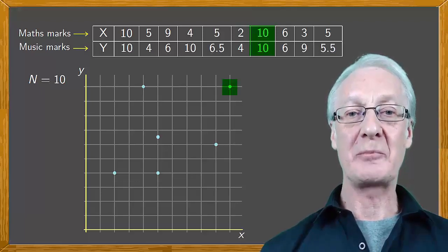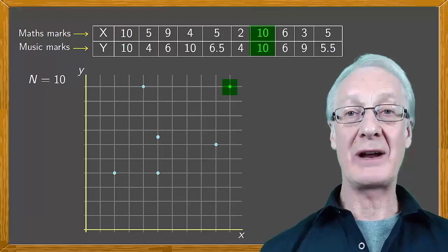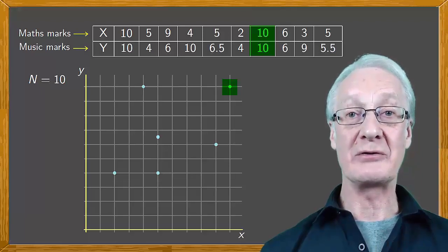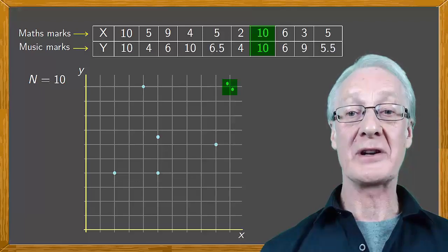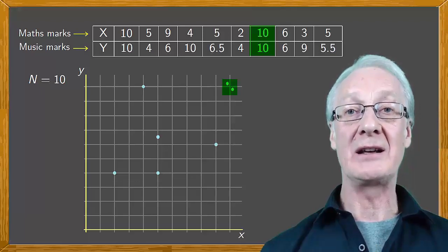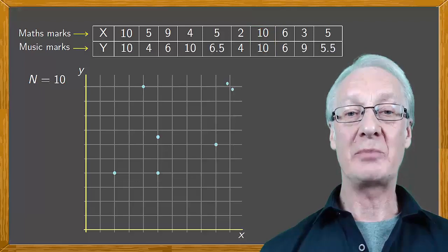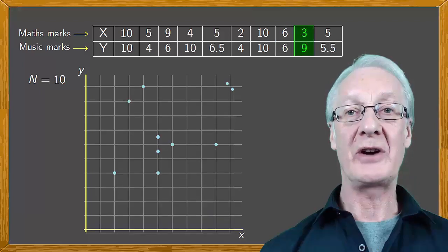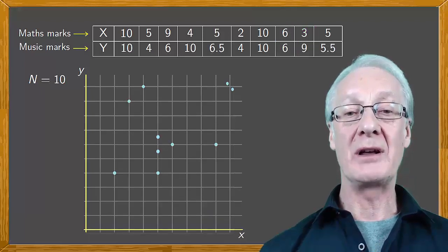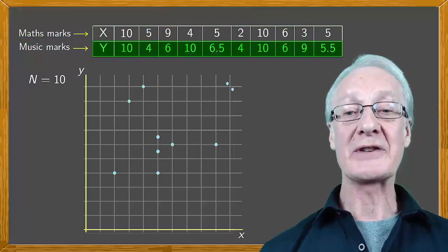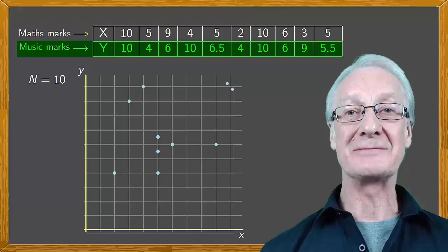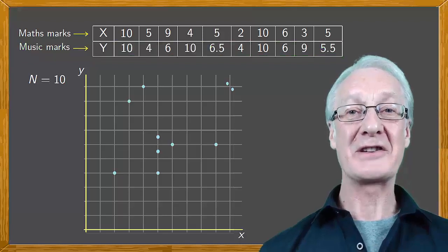We already had a data point at coordinates (10, 10). So if we put another one on top of this, it isn't going to be recognised that we have two students with (10, 10). What's usually done in such cases is to mark two dots close to (10, 10), so that it's understood that the pair (10, 10) has to appear twice. Finally, we have points at (6, 6), (3, 9), and (5, 5.5). Remember that the first element of each pair corresponds to the grade of a student in maths, and the second to the grade of that student in music.